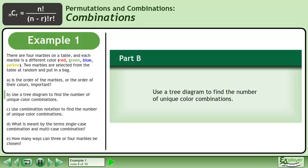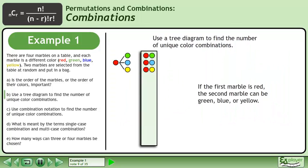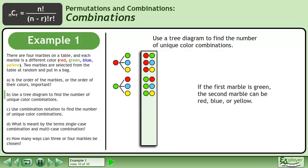In Part B, use a tree diagram to find the number of unique color combinations. If the first marble is red, the second marble can be green, blue, or yellow. If the first marble is green, the second marble can be red, blue, or yellow. If the first marble is blue, the second marble can be green, red, or yellow.